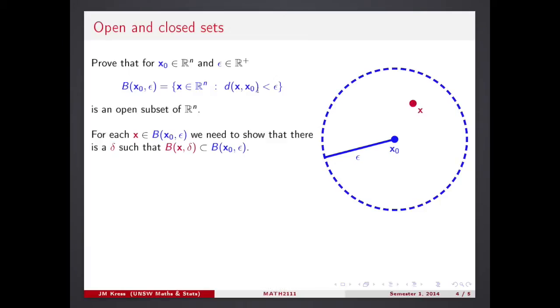Look at this. We have to, in order to justify that claim, we have to show that every point in this ball is an interior point. So every point in this ball belongs to this ball together with some other ball around it. Visually it seems like a clear thing.